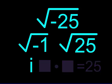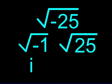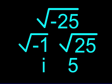That's right! 5 times 5 is 25, so the square root of 25 is 5. That leaves us with our answer: 5i.